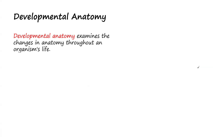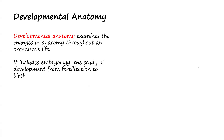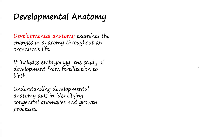The next branch is developmental anatomy. Developmental anatomy examines the changes in anatomy throughout an organism's life. In humans, we start from embryo — through blastula, morula — then from embryo to fetus, starting from childhood to adulthood. Developmental anatomy traces structural changes from the zygote up to the adult state. It also includes embryology, which involves the study of development from fertilization to birth.